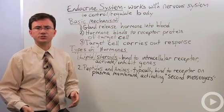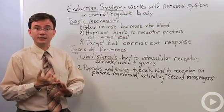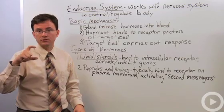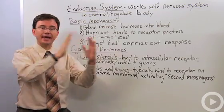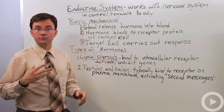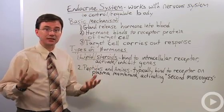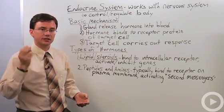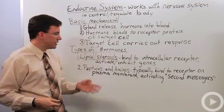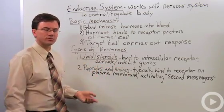One of the most common second messengers is something called cyclic AMP, often written as cAMP. It's created by an enzyme called adenyl cyclase. If you see that, you know it's cyclic AMP, it's a second messenger, and it's not a steroid hormone.